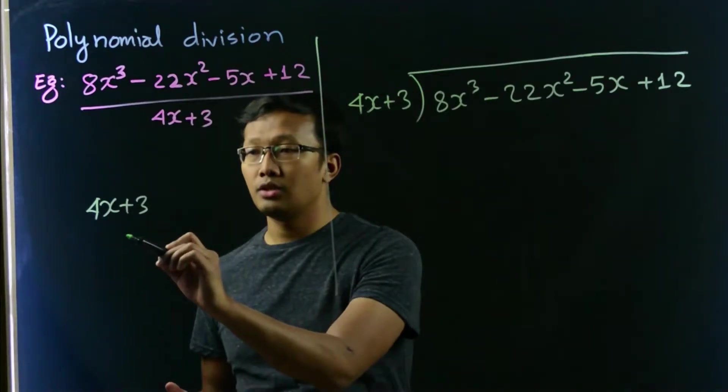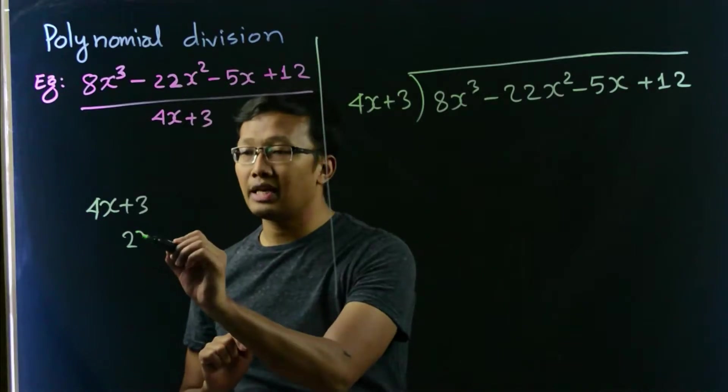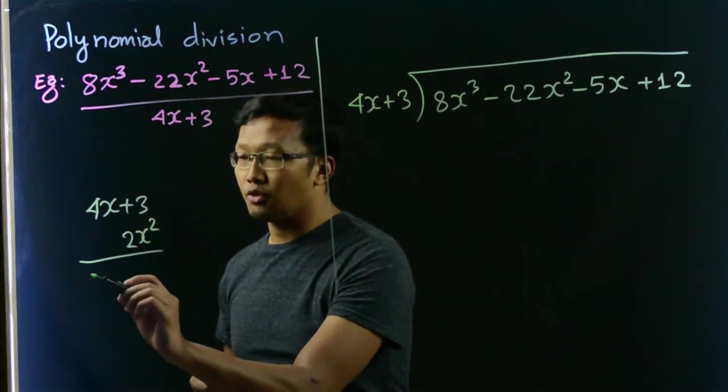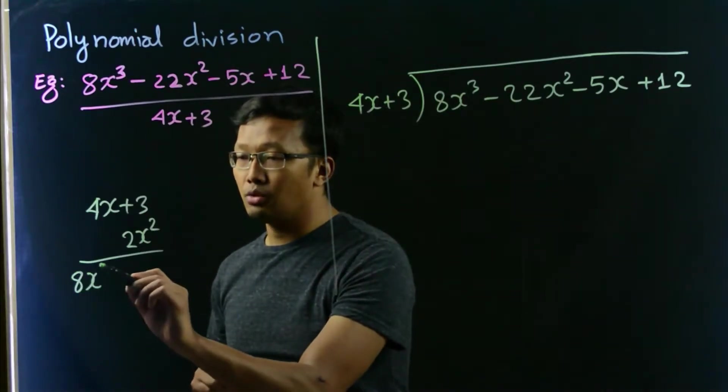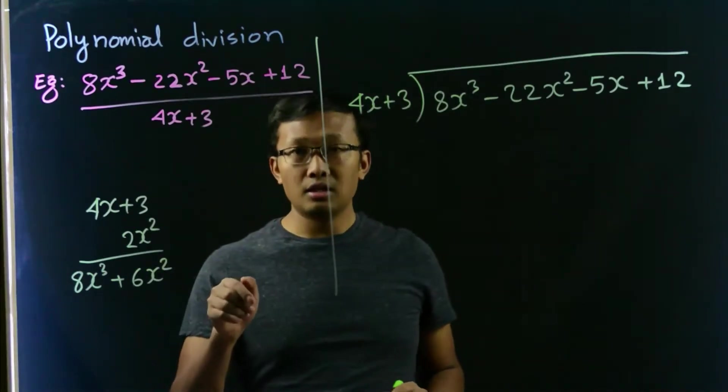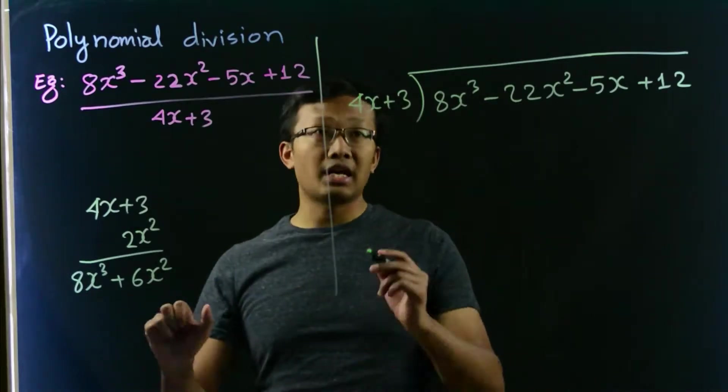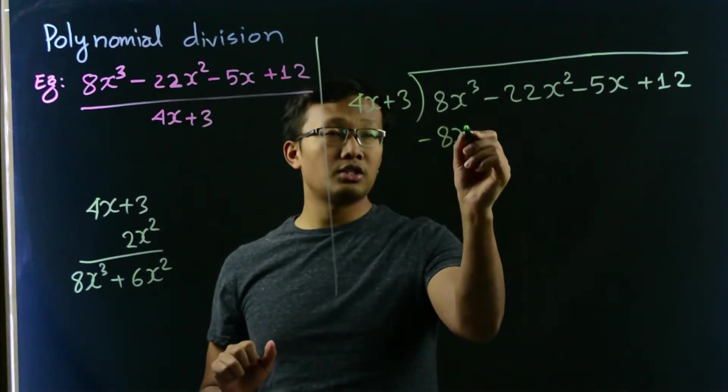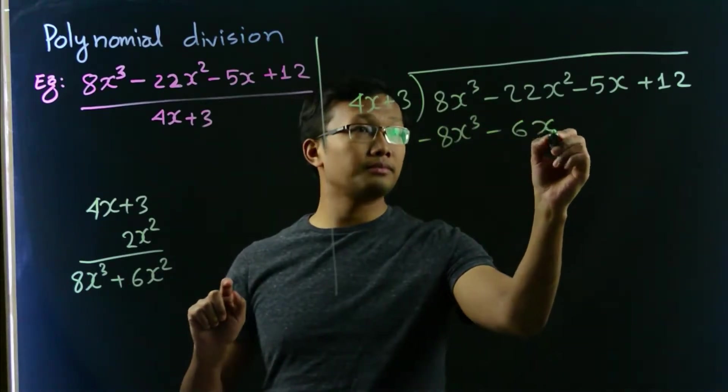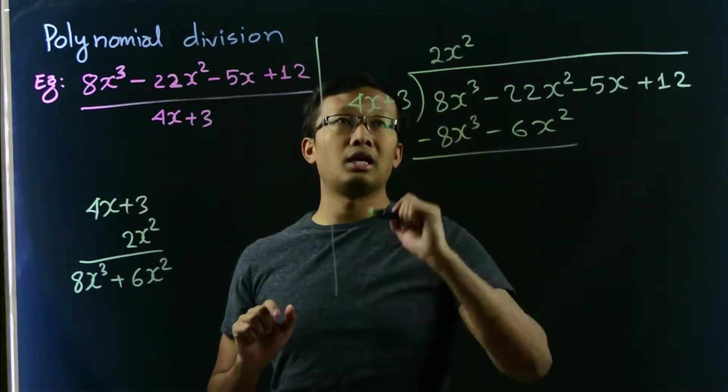By 2, so that 2 times 4 will give us 8, and x times x squared will give us x cubed, so that's 2x squared times 4x is 8x cubed plus 2 times 3 is 6x squared. And while writing this thing here, we should change the signs, so that is 8x cubed. Here we have positive, so that's negative 6x squared. And don't forget to write 2x squared, it's part of our quotient.